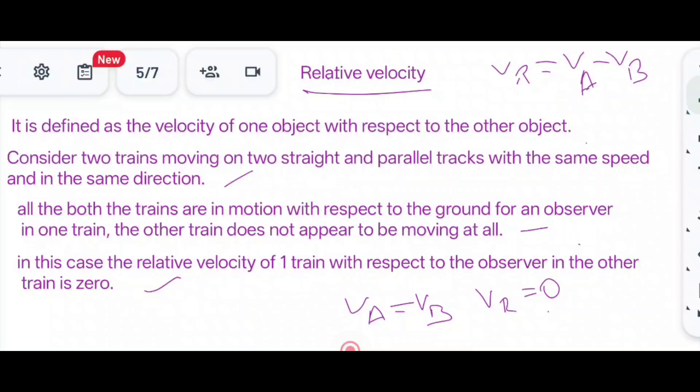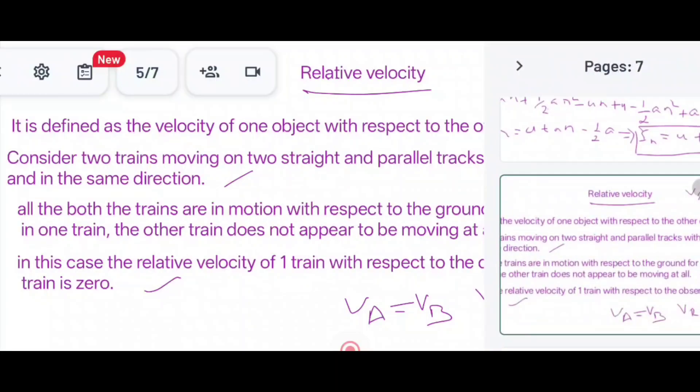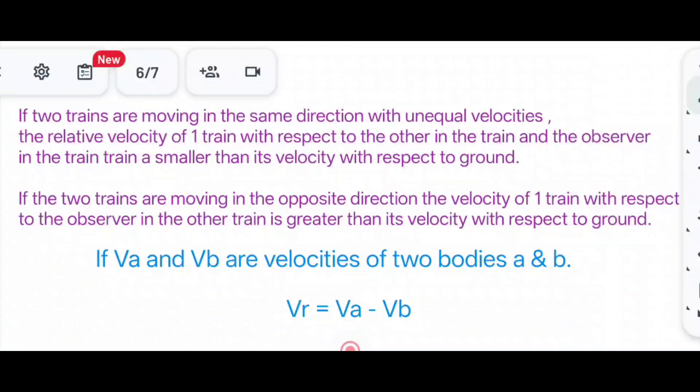If two trains are moving in the same direction with unequal velocities, then there is a change in the relative velocity, that is Vr equals Va minus Vb. If it is moving with unequal velocity with respect to the other observer in the train, you will feel that the other train is moving with a smaller velocity with respect to the ground.